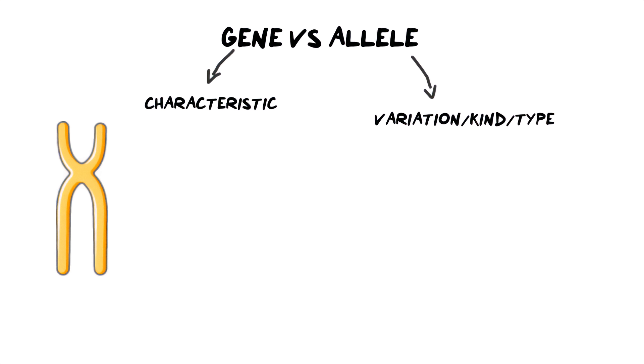And an allele is a variation of that gene. For example, you have your eye color gene. And a variation of that gene would be a blue-eyed allele, a brown-eyed allele, a green-eyed allele. Those are all variations of eye color. Eye color is the characteristic and the actual physical color itself is the allele or the variation.